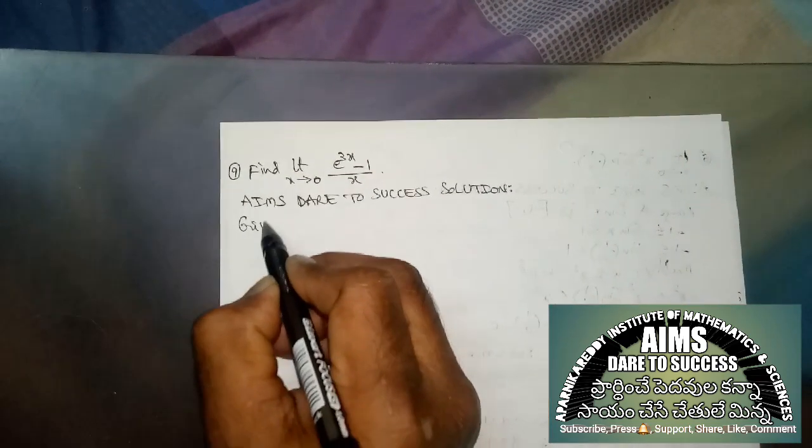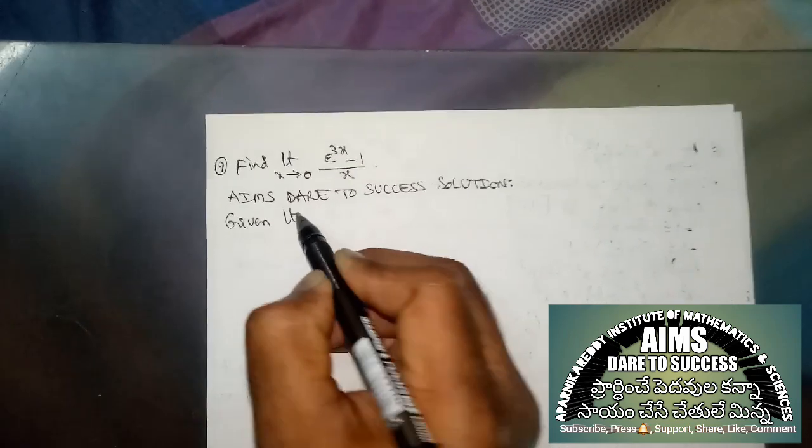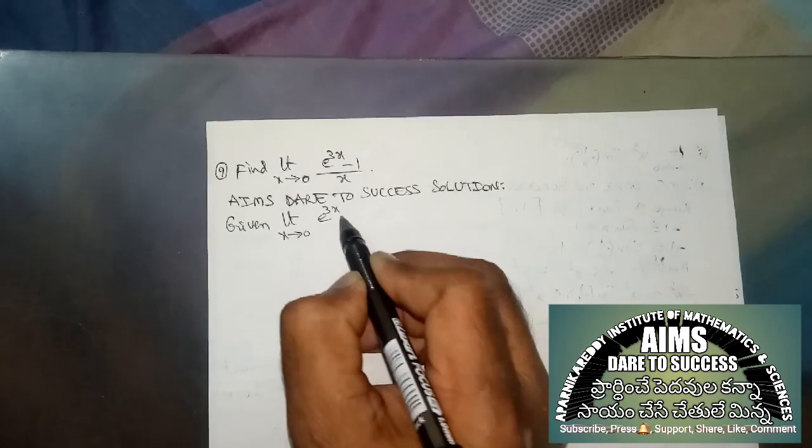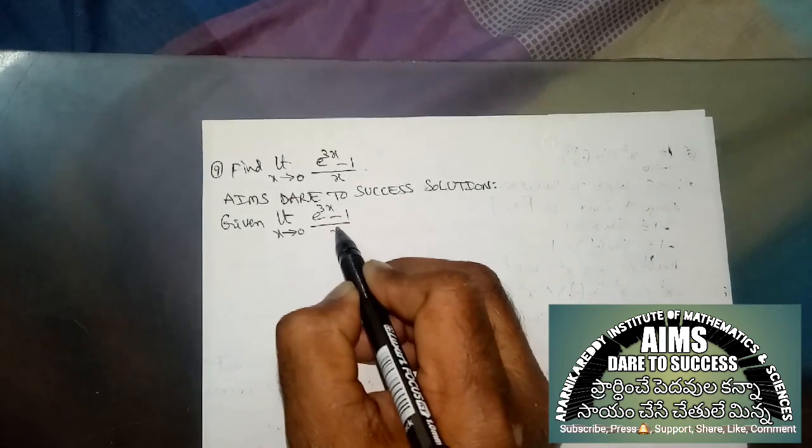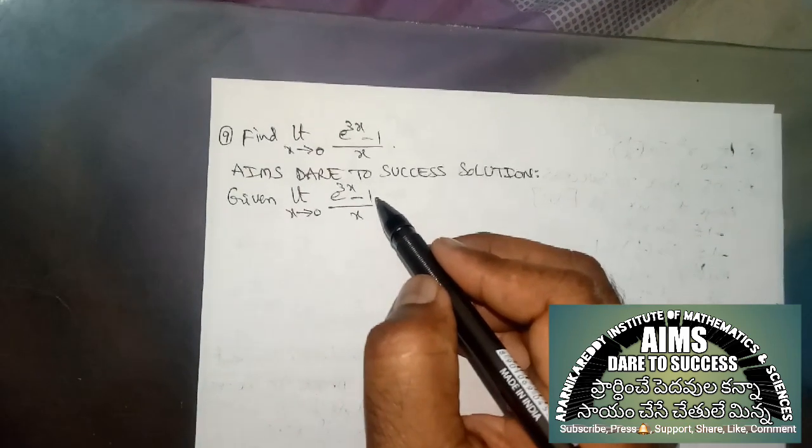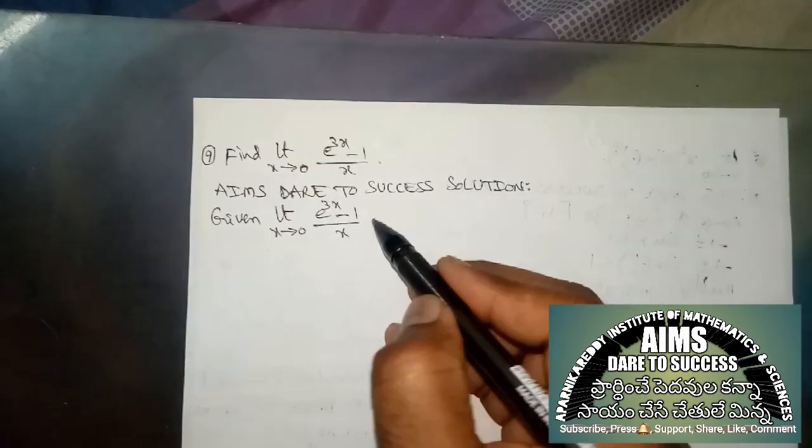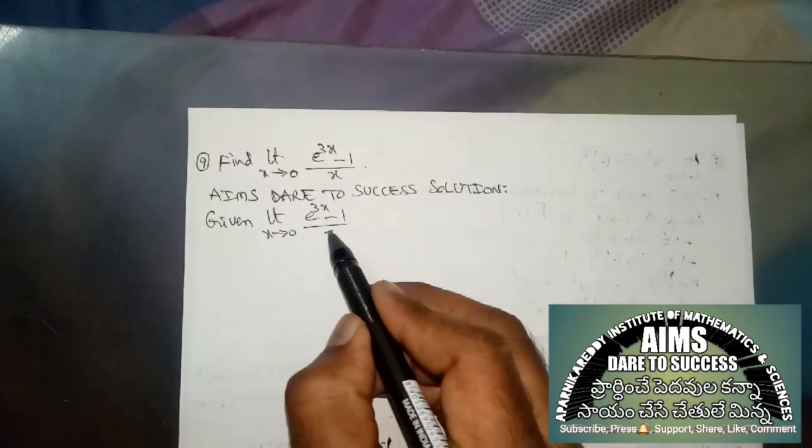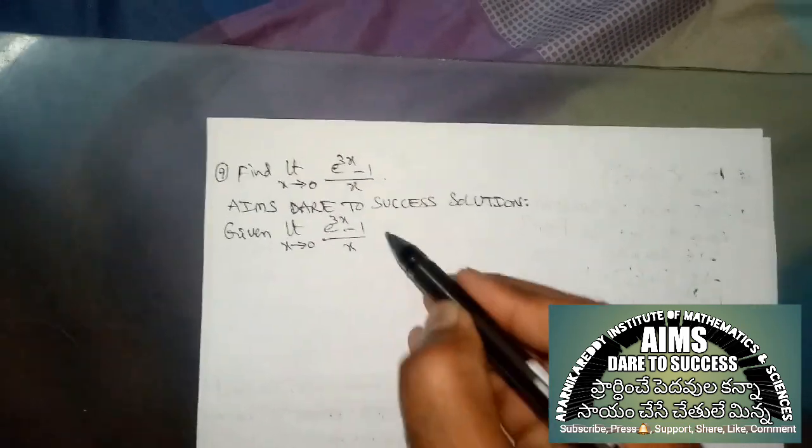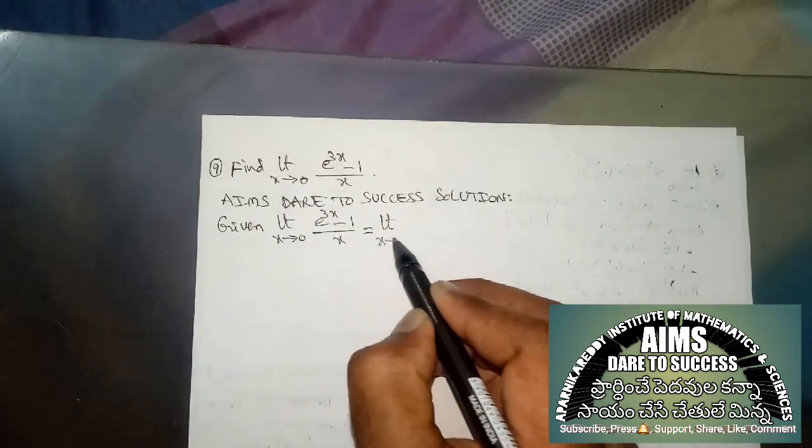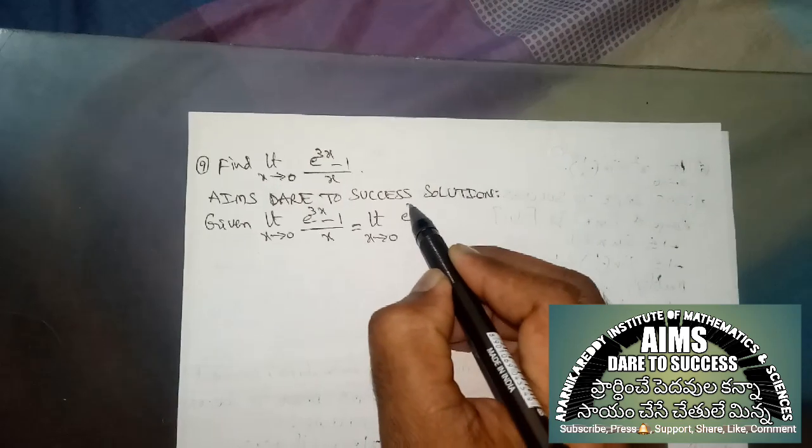Given value is limit x tends to 0, e power 3x minus 1 by x. So here we are not having the related formula. Power value is 3x but denominator value is x, so we are multiplying and dividing with 3.